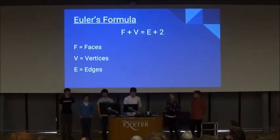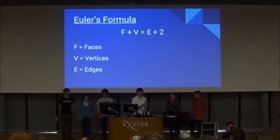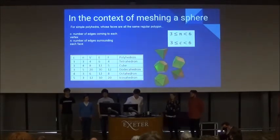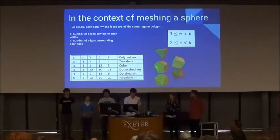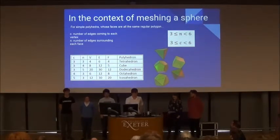There are many proofs of the formula, and also lots of applications outside meshing a sphere. For example, no simple polyhedra can have seven edges, but that goes into quite some detail and it's on our poster, which you can see outside. In the context of meshing a sphere, you can use it to prove that there are only five platonic solids, which is useful because they're perfectly uniform, which is useful for meshing a sphere.